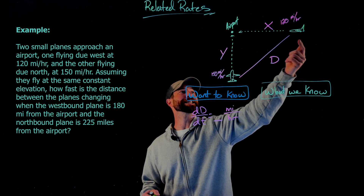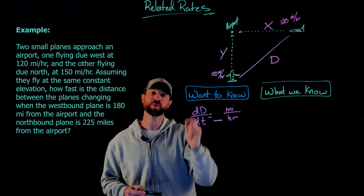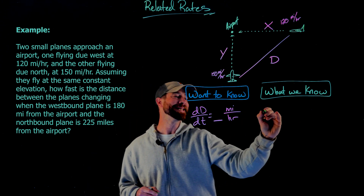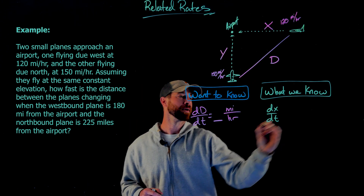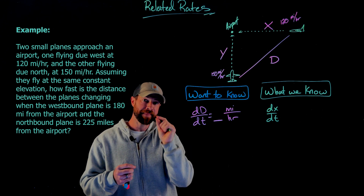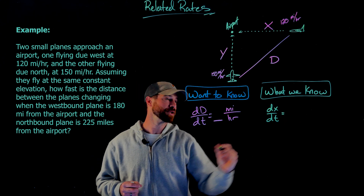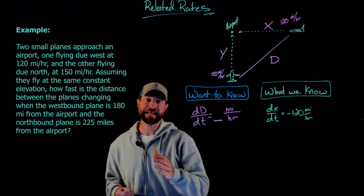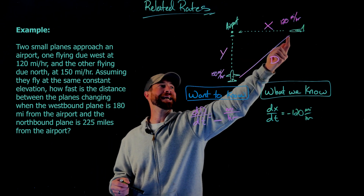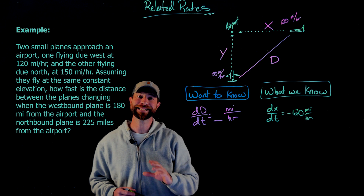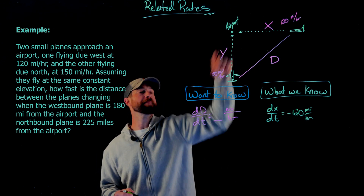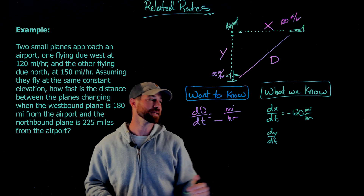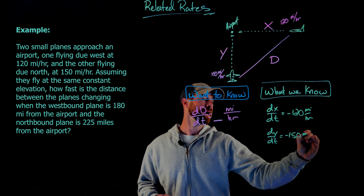Now I'll write the given rates as differentials. The first airplane is moving westbound towards the airport at 120 miles per hour. Since I've labeled that plane's distance from the airport as x, that rate is dx/dt, and it's negative 120 miles per hour — negative because the distance is decreasing as the plane approaches the airport. Similarly, the northbound plane's rate is dy/dt, which is negative 150 miles per hour.